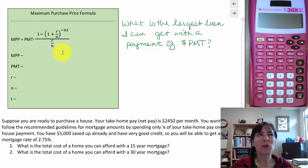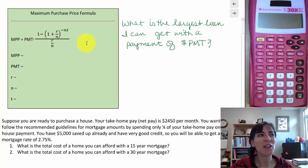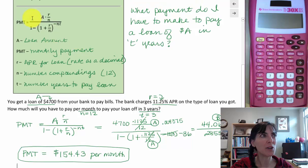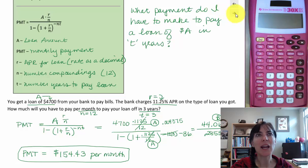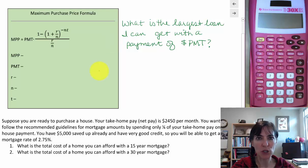This looks a lot like the other formula that we were using, but flipped over — and it actually is the other formula flipped over. We took that same formula and solved it for A instead of PMT, and changed A to MPP, which we are using to represent maximum purchase price.